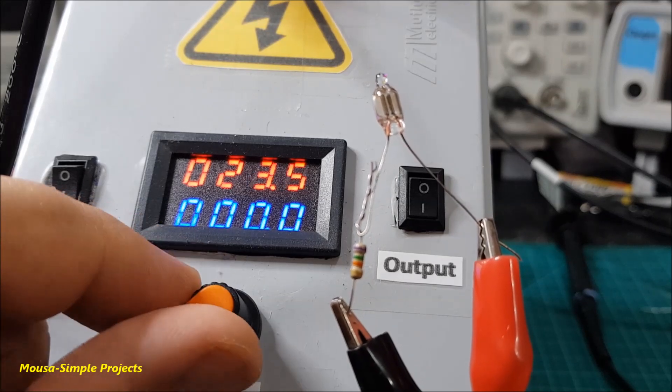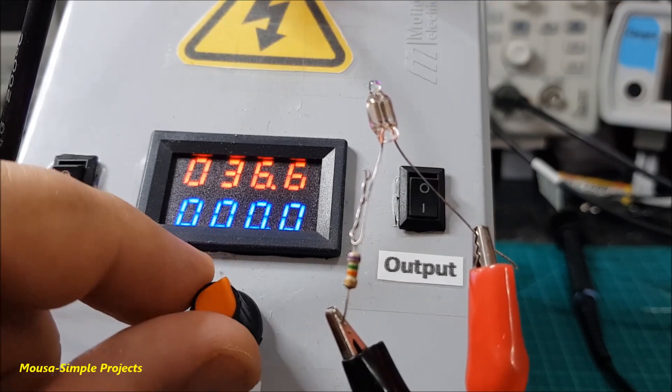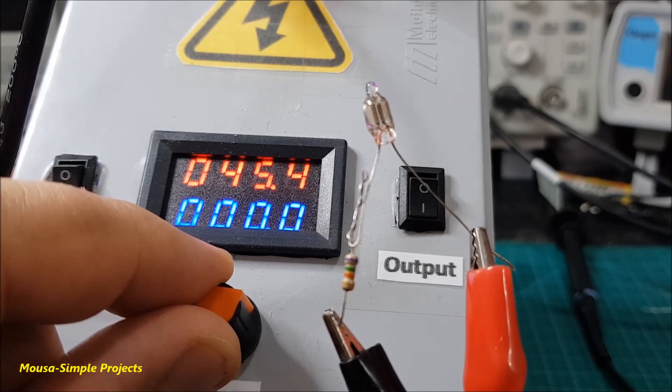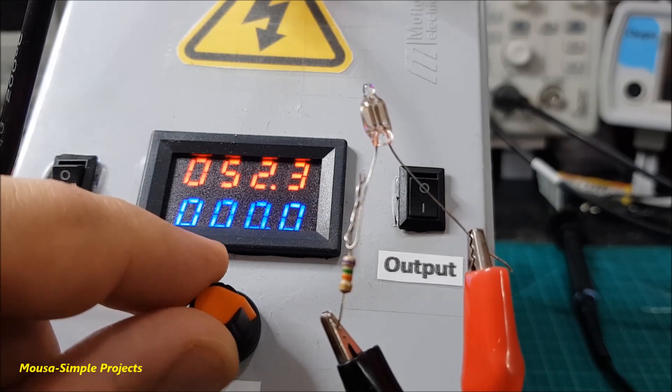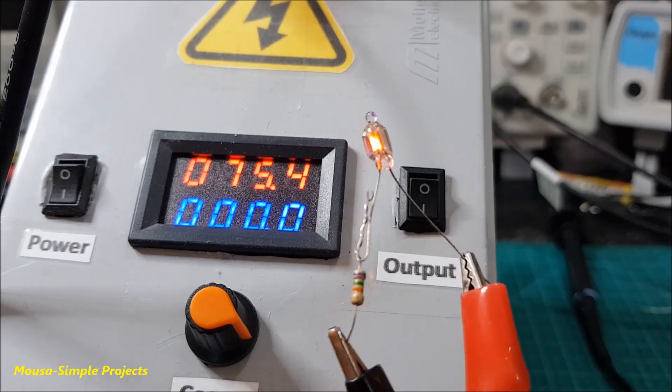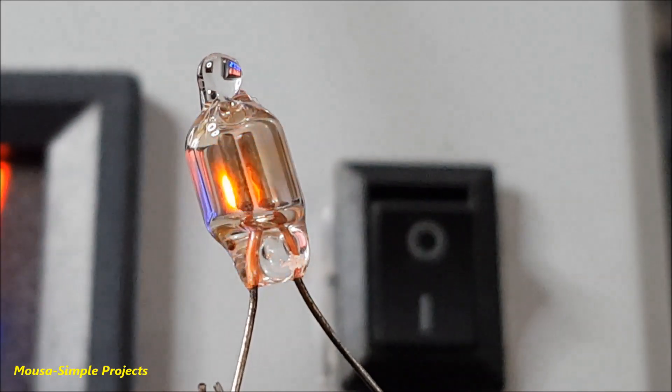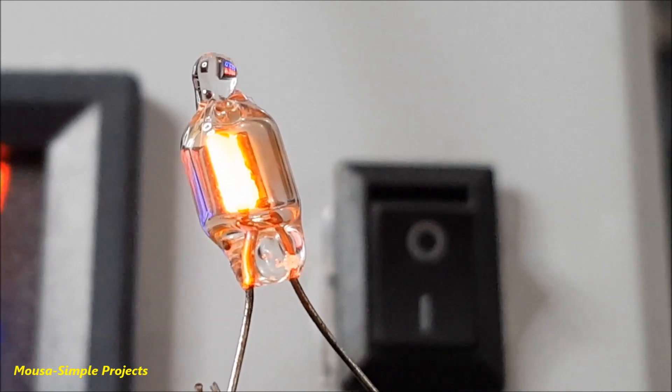First, I connect this neon lamp to this DC adjustable power supply and start to increase the voltage. As you can see, at a voltage around 80 V DC, the lamp starts to glow. As I said before, at DC voltage only the electrode that's connected to the minus side glows.